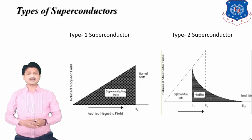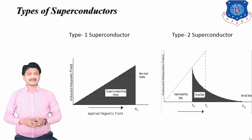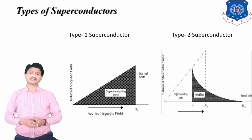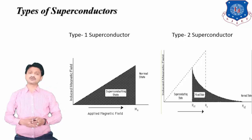The mixed state is also known as the vortex state. Compared to Type 1, Type 2 superconductors do not completely exhibit the Meissner effect. The value of the critical magnetic field in Type 2 superconductors is higher than in Type 1 superconductors, which is why Type 2 superconductors are also known as hard superconductors and have broader industrial applications.